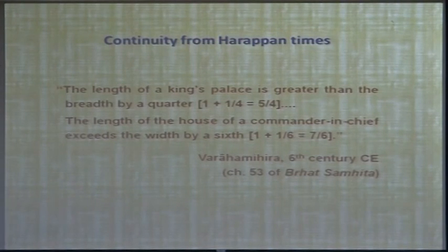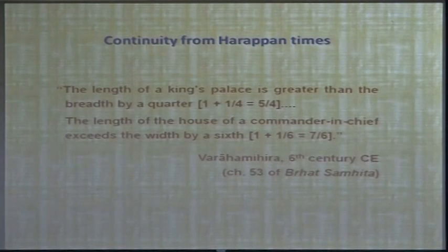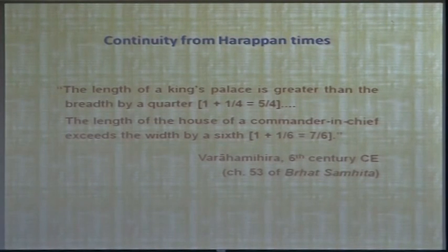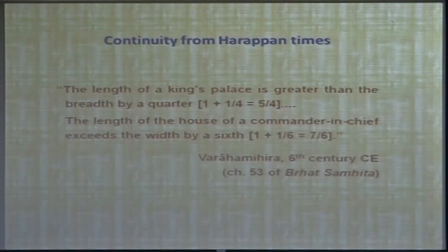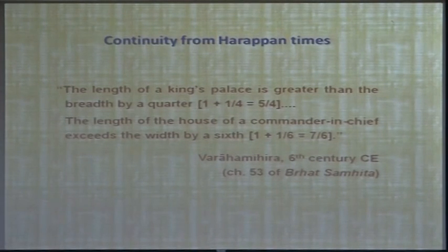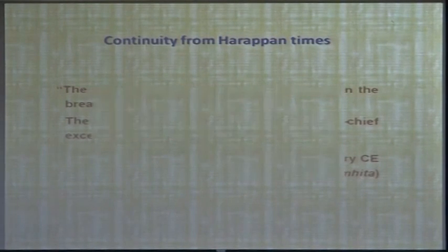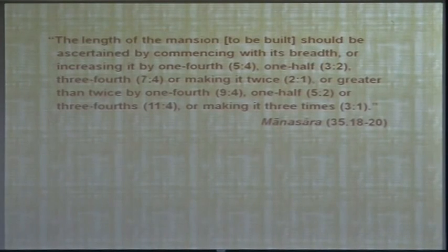Before moving to classical architecture, consider this surprising quotation by Varahamihira, who lived in the sixth century AD. In his Brihat Samhita — a kind of encyclopedia — there are chapters on architecture laying down precise proportions. Varahamihira says these are auspicious proportions. For example: the length of a king's palace is greater than the breadth by a quarter — mathematically giving us 5 to 4, the same proportion as the castle at Dholavira. The length of the house of a commander-in-chief (Senapati) exceeds the width by one-sixth, giving 7 to 6 — the proportion of Dholavira's middle town. There seems to be a continuity.